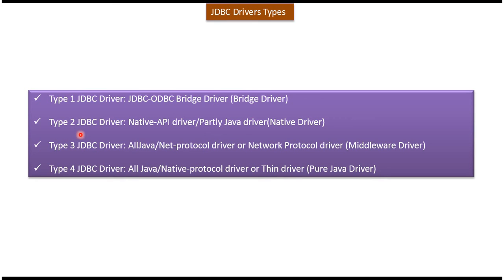The Type 2 JDBC driver is called Native API Driver or Partially Java Driver, and it is simply called Native Driver. The Type 3 JDBC driver is called Net Protocol Driver or Network Protocol Driver, and it is simply called Middleware Driver. The Type 4 JDBC driver is called Native Protocol Driver or Thin Driver, and it is simply called Pure Java Driver.